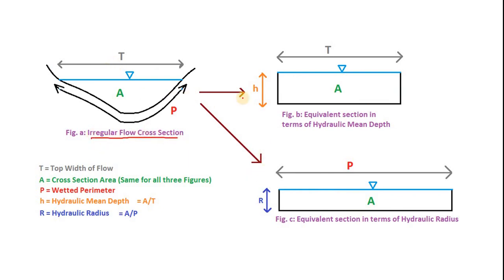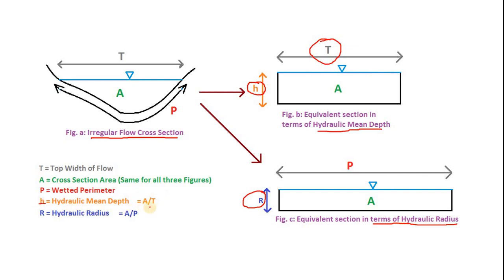This is the irregular flow cross section. Now we are making the equivalent cross sections according to hydraulic mean depth and hydraulic radius. The area in all three cases is the same. When we divide area with respect to T (top width) we get the hydraulic mean depth H, and the width of this equivalent rectangular cross section becomes T. So H multiplied by T gives the area.